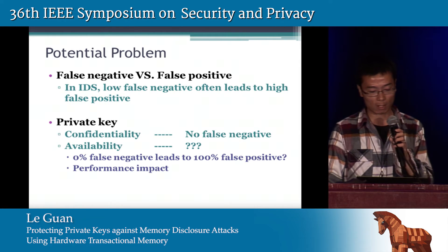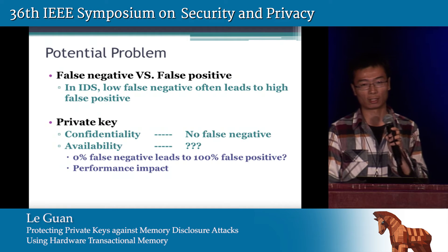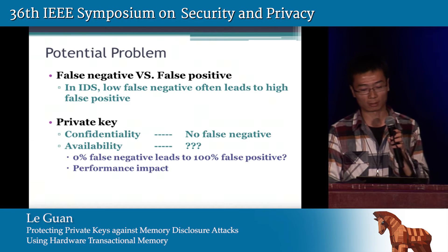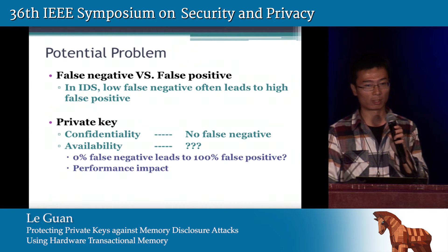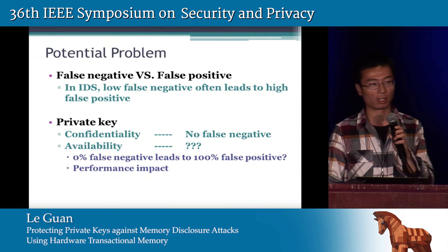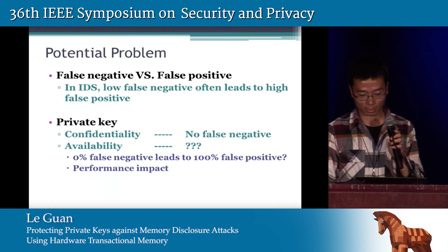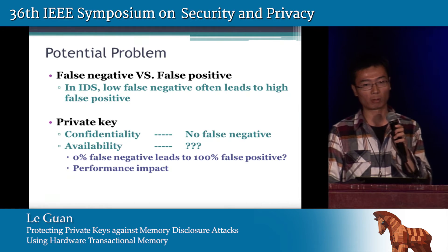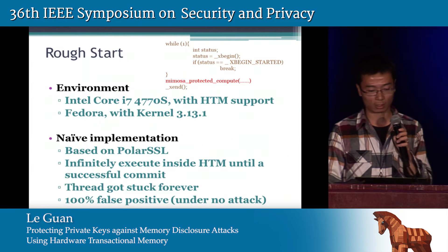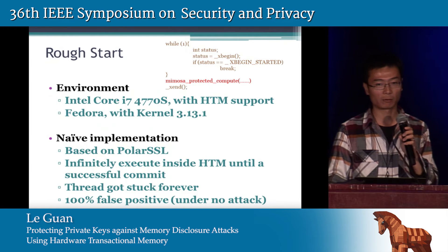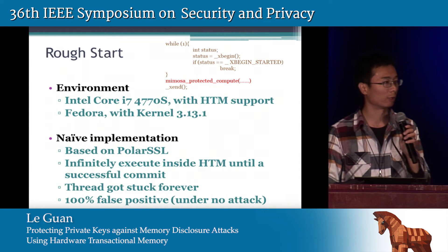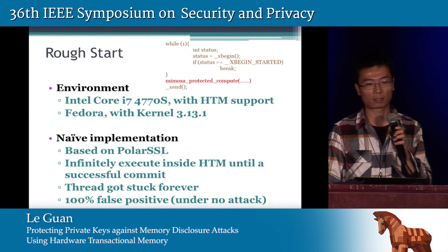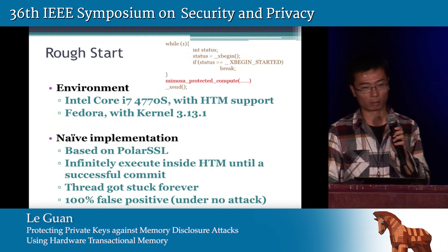As mentioned earlier, our solution guarantees confidentiality of the private key with no false negative. But in an IDS system, low false negative often leads to high false positive. A high false positive means the transaction is aborted again and again, and there will be no availability at all — in other words, the solution may have a performance impact. It turned out we had a very rough start. In our naive implementation, we wrote simple code to do cryptographic operations inside the transaction memory until a successful commit. Unfortunately, the thread got stuck forever — aborting again and again — 100% false positive, even under a no-attack scenario.